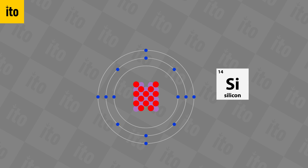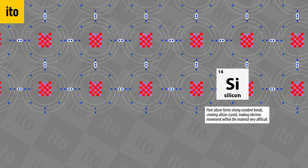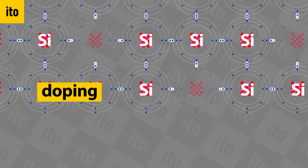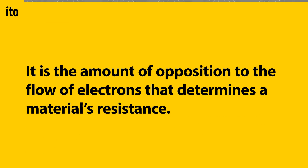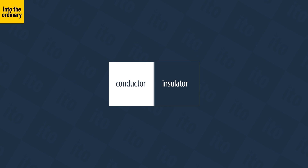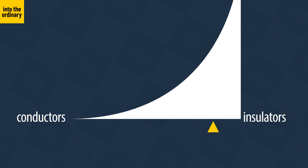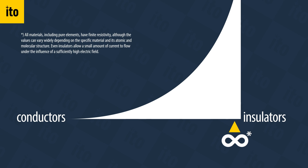These are called semiconductors. Silicon is a famous example. Pure silicon is not as conductive as a metal, but also not a very good insulator. Using a process called doping, specific impurities can be added to the silicon to modify its conductivity. It is the amount of opposition to the flow of electrons that determines a material's resistance. Conductors, semiconductors, insulators — resistance is a sliding scale, with conductors having low resistance and insulators very high or practically infinite resistance.